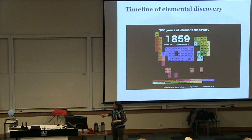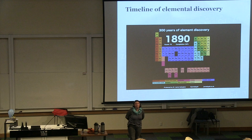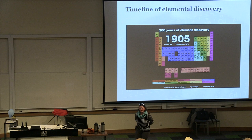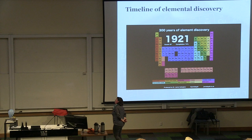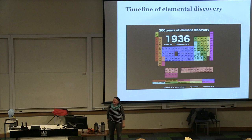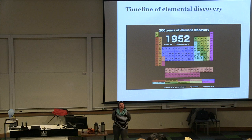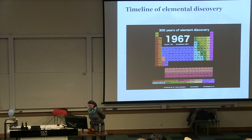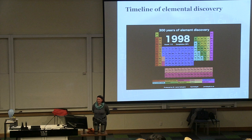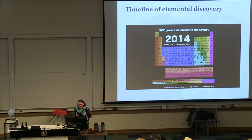You'll notice a gap in the middle — this is technetium. Everything around it has been known for a very long time, but technetium doesn't get filled in until about the 1930s. It's a very difficult element to find and we'll discover why later. By now Mendeleev has come into play and we have the periodic table. You can see technetium filling in, and then a very rapid filling in of the gaps. And then just towards the end, suddenly all these last ones fill in — and nothing since 2012.